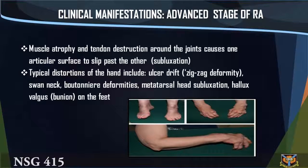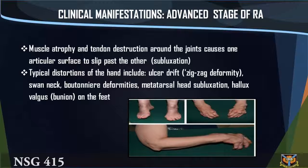Typical distortions of the hand include ulnar drift, zigzag deformity, swan neck, and boutonnière deformities. On the feet: metatarsal head subluxation, hallux valgus, and bunion formation.